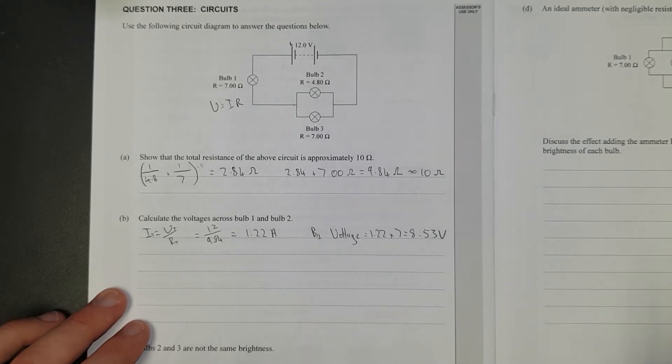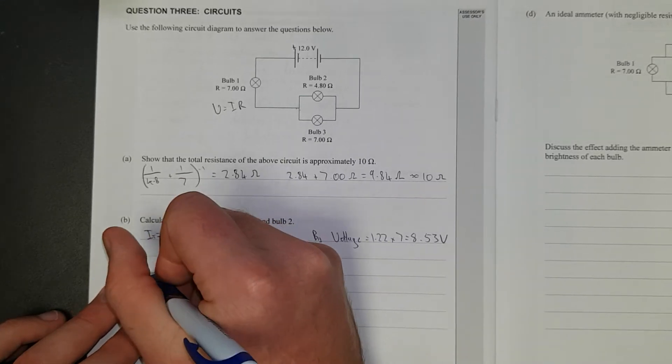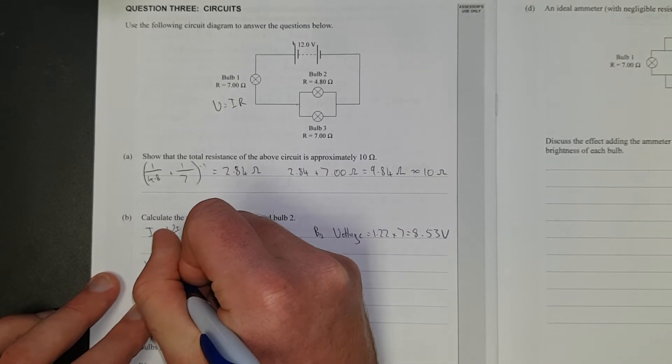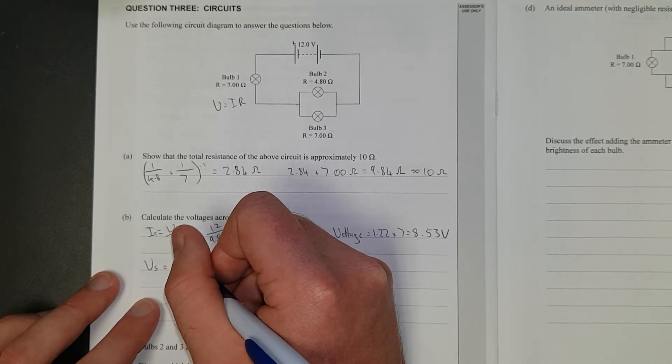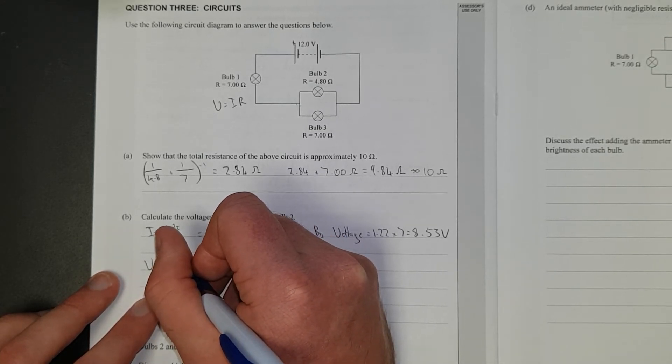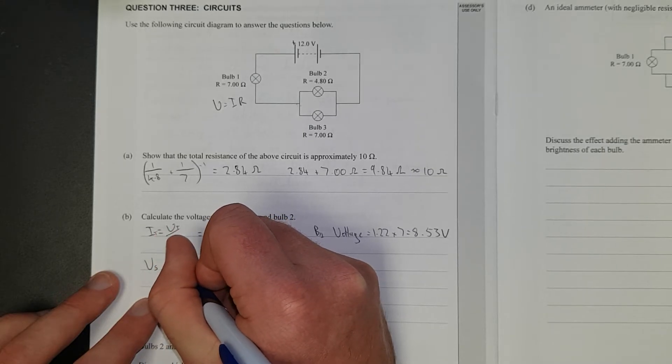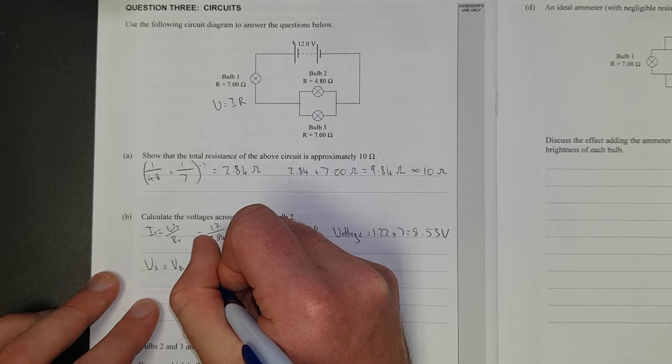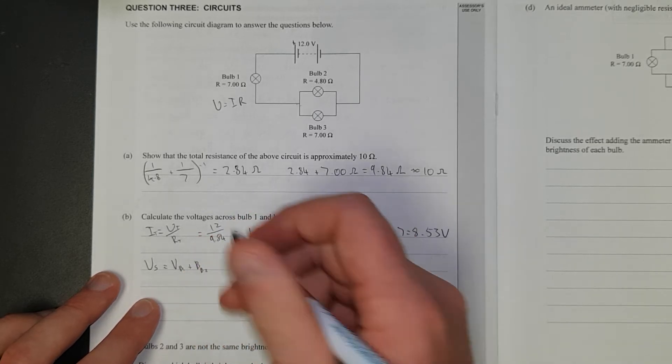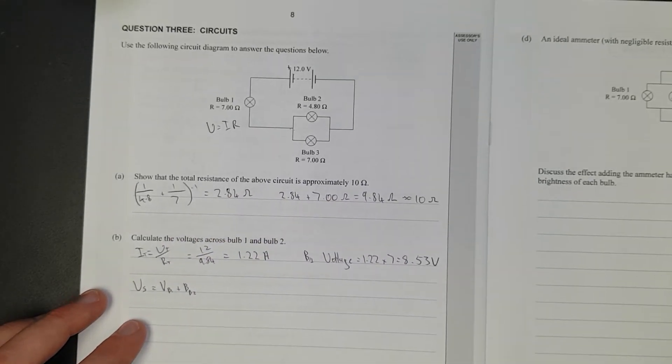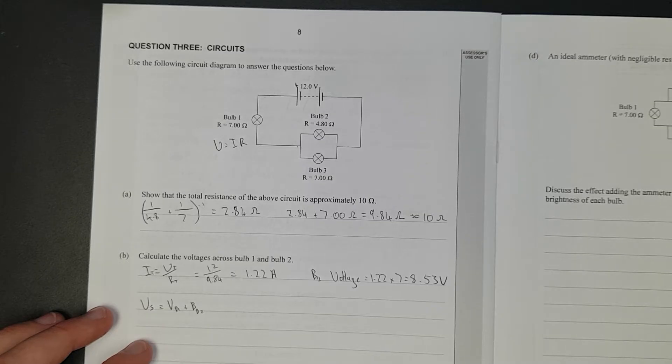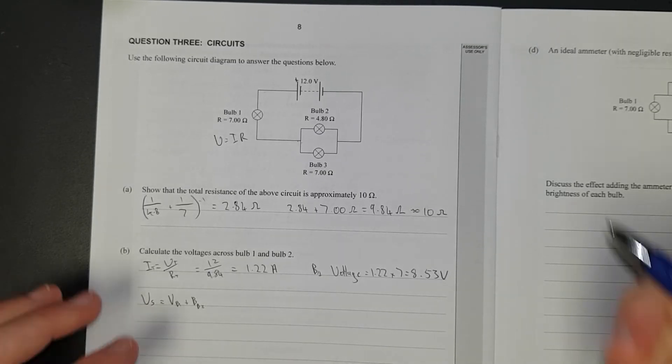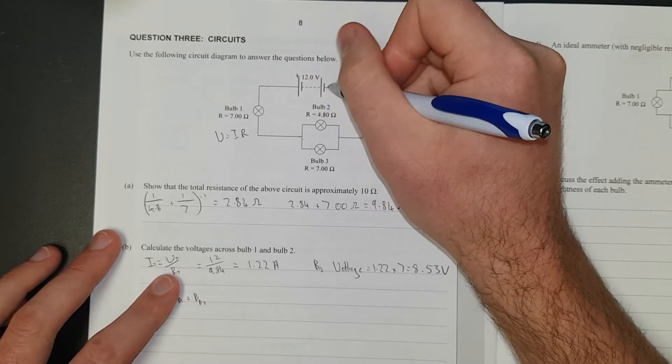Right, now here's a cheeky wee trick you can use. I sort of explained it roughly up here. V supply is equal to Vb1 plus Vb2. Right, and the reason being is in level 3 you learn a law called Kirchhoff's voltage law, but really it's just common sense, conservation of energy.